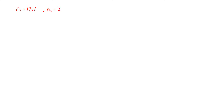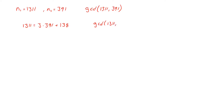Let us look at a numerical example. We use n1 equals 1311 and n2 equals 391, and our goal is to find the GCD of these two numbers using Euclid's algorithm. In the first step, we divide 1311 by 391 and write 1311 equals 3 times 391 plus remainder 138. From this, the GCD of 1311 and 391 is the same as the GCD of 391 and 138.